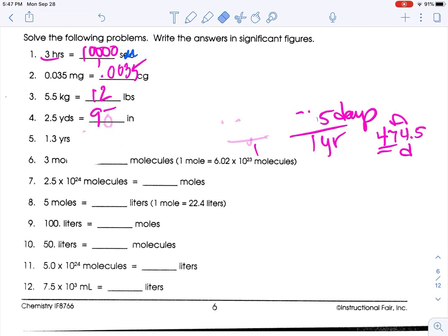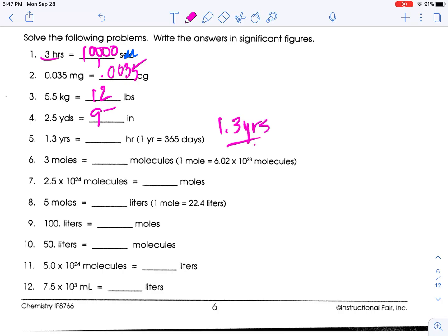Oh silly me, we weren't done. They wanted hours. One year is 365 days, and then in one day there's 24 hours. So 1.3 times 365 times 24 is 11,388. Two sig figs, so 11,000 hours. Sorry about that confusion.